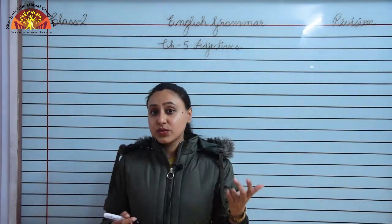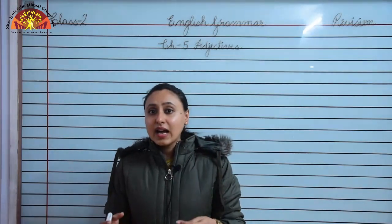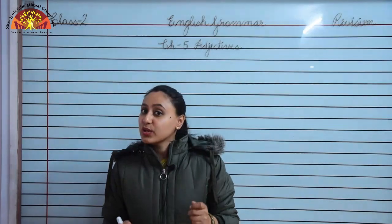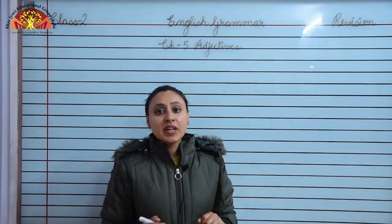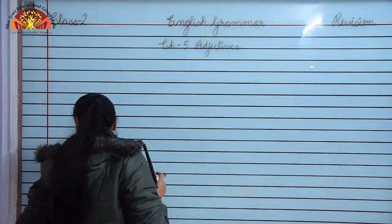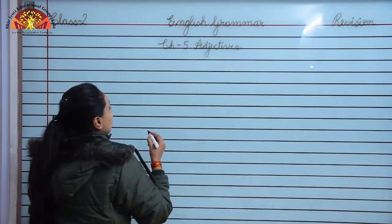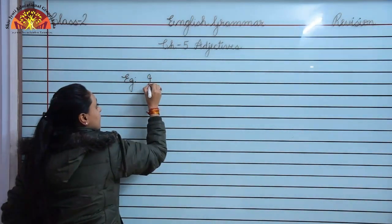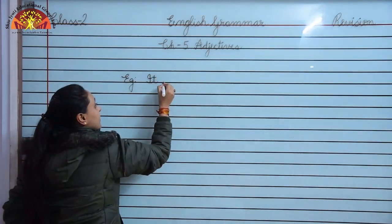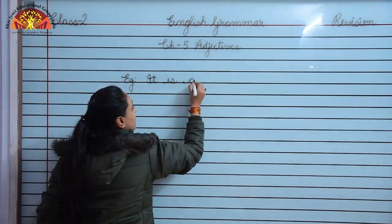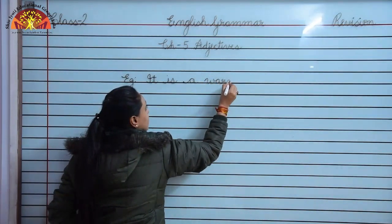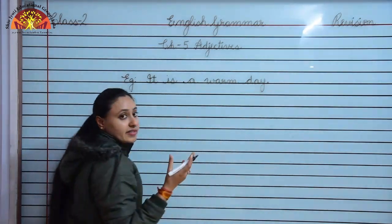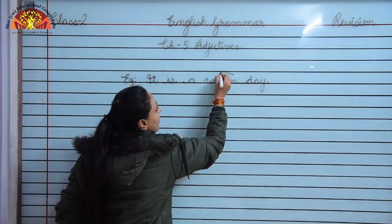Words which we use are warm, light, small, big, thirsty, smart, intelligent, pretty. These all are adjectives. Now let us see through some examples. Example one is: it is a warm day. So children, the adjective or describing word for 'day' is warm.